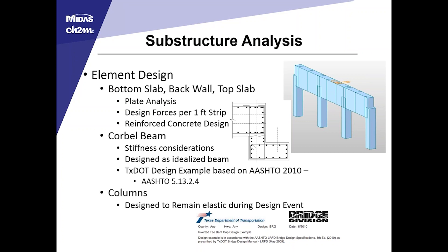The corbel beam stiffness considerations were used to idealize a beam representing that L-shaped corbel and to approximate how much of the top slab was serving as a beam element. For the design of the ledge corbel itself, we used the textbook design example based on the 2010 AASHTO and checked the 2012 AASHTO for applicability. That checks all independent failure mechanisms: punching shear, moment about various elements, pure tension in the stem, moment about the ledge, interface shear, and so on.